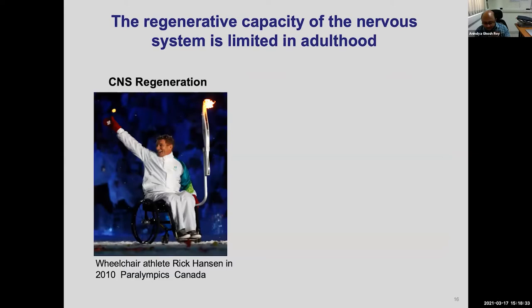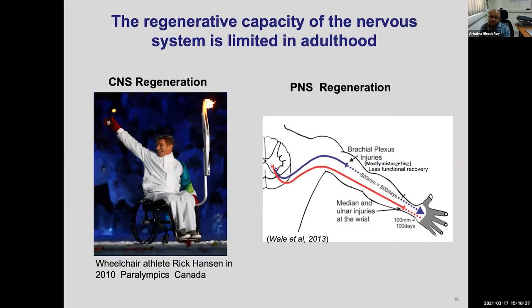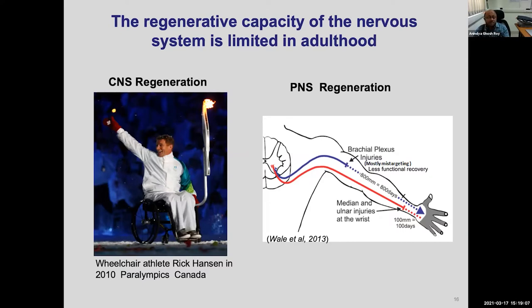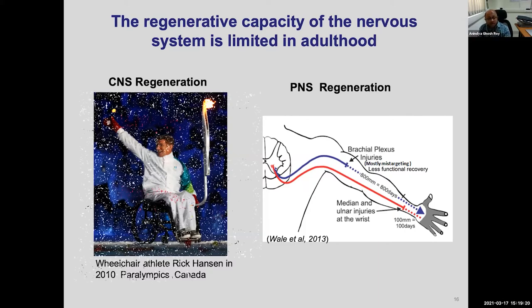On the other hand, peripheral nerves also get injured. Examples include brachial plexus injuries and carpal tunnel injuries where the median nerve gets broken. Many times these broken nerves can regenerate, although not perfectly—they have regeneration potential. The key difference is that peripheral nerves have regeneration potential, whereas the central nervous system does not. People have been trying to understand why CNS neurons don't regenerate and how to make them regenerate so that injury patients can get some relief.